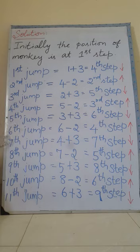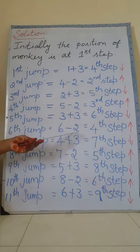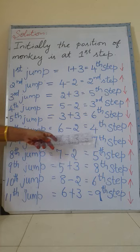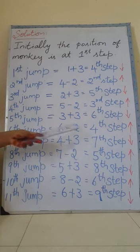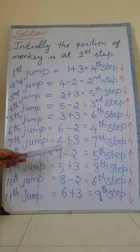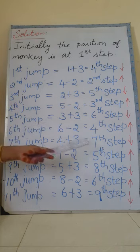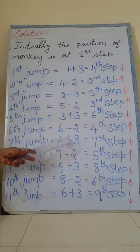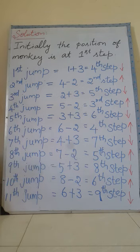Now move to the sixth jump. The position of the monkey at the fifth jump is the sixth step. Again, he moves two steps back, so minus two. The position of the monkey at the sixth jump is the fourth step. Now move to the seventh jump: position is fourth step, plus three equals seventh step. Then moving to the eighth jump: the position is the fifth step.